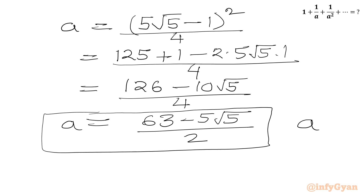Now √5 is approximately 2.23, so a is greater than 1. Therefore 1 over a is less than 1, and our geometric series with first term 1 and common ratio 1 over a will be convergent.